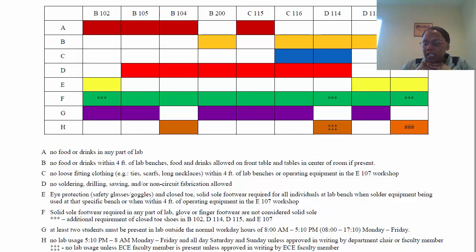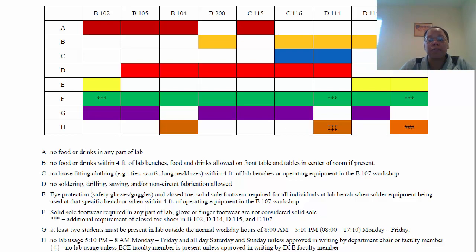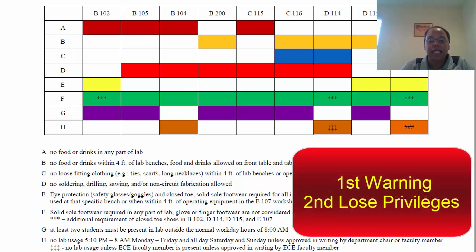Lab safety rules: your labs will be completed in B200, so review the document for the rules for that room. There's no food or drink within four feet of the lab bench — store food on the table at the front of the room. There's no soldering, drilling, sawing, or non-circuit fabrication in this room, and you must wear solid-sole footwear at all times. At least two students must be in the room at all times outside of normal workday hours. Do not leave doors propped open or leave materials at a bench while you go to class or leave for the night. Under the new accountability system, breaking any lab rule results in a warning first, and on the second occurrence you lose privileges to use the lab outside of class time.